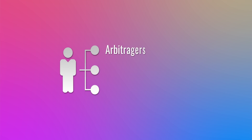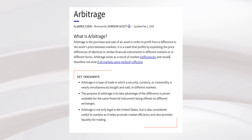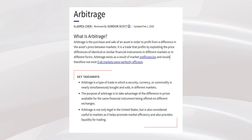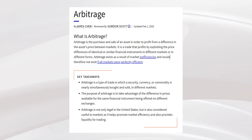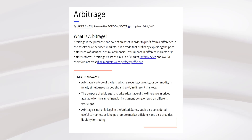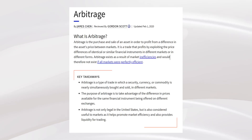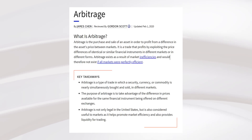One: arbitrators. Two: hedgers. And three: speculators. In this video we are going to discuss in detail about arbitrators. Hedgers we will discuss in the next video, and speculators is very simple — maybe we can cover in this video itself. So first, let us look at the definition of arbitrage. The definition seems to be more confusing, so let me explain in simple terms.